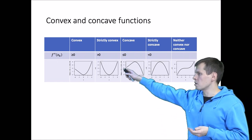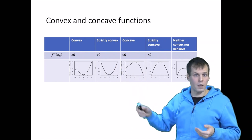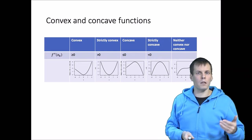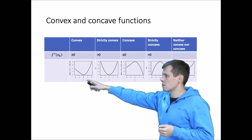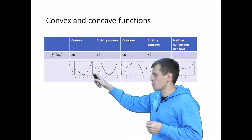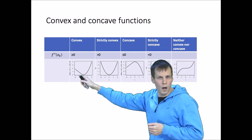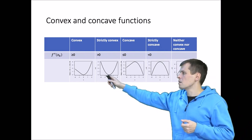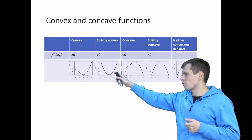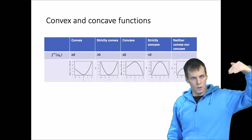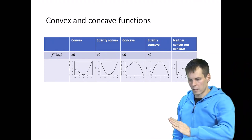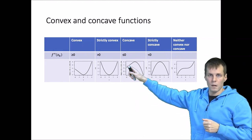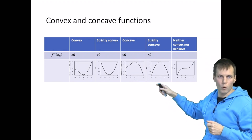A convex function is one where the second derivative is always positive or zero. When the second derivative is zero, the function is a straight line at some point — we have a straight part and then it curves up. This is convex. Strictly convex means we always turn slightly to the left as we travel along the line — we go left until we are at zero and then up again.